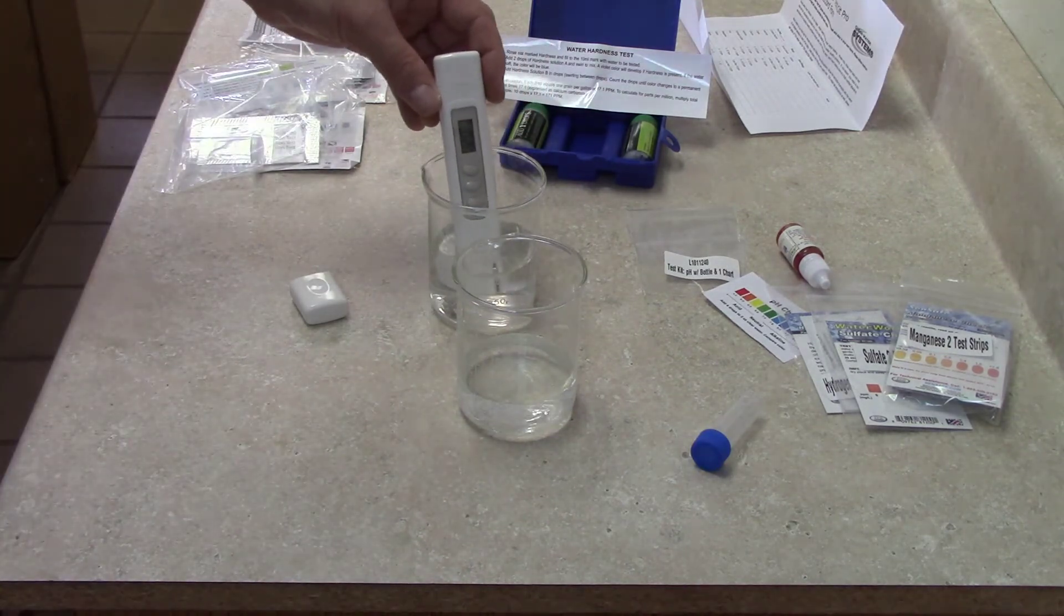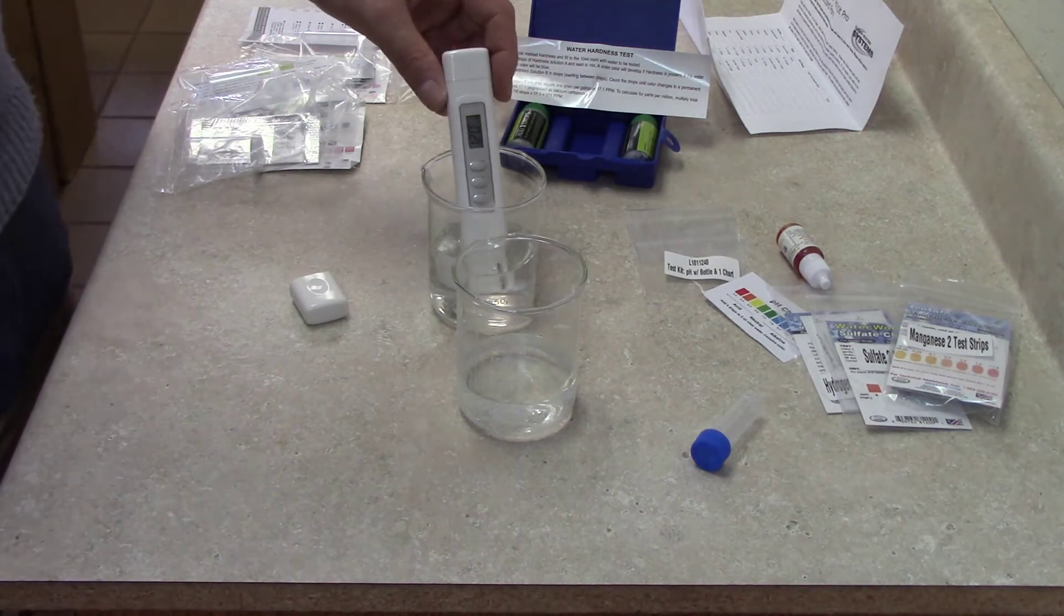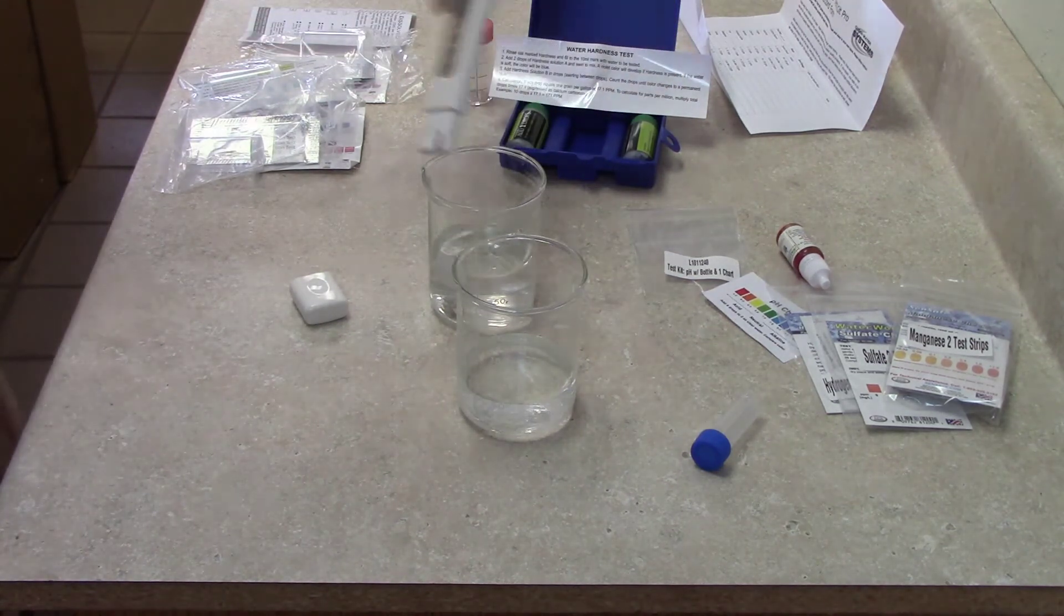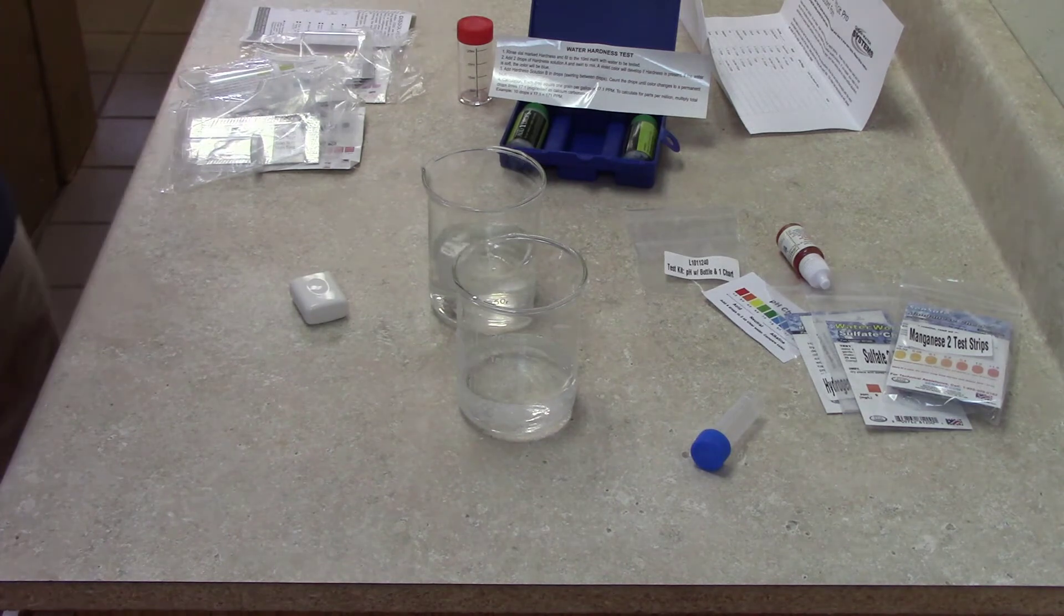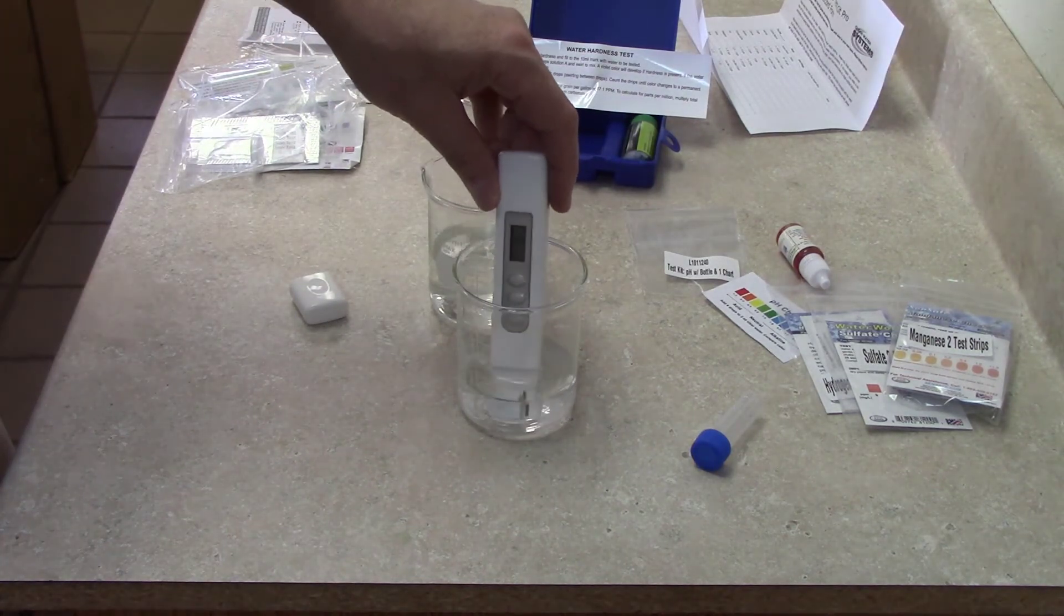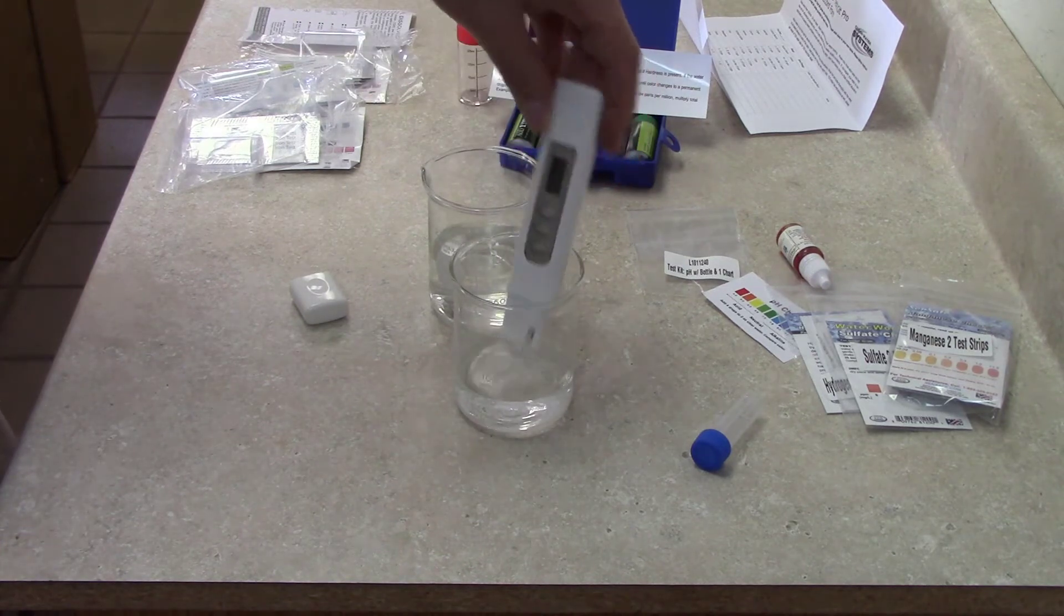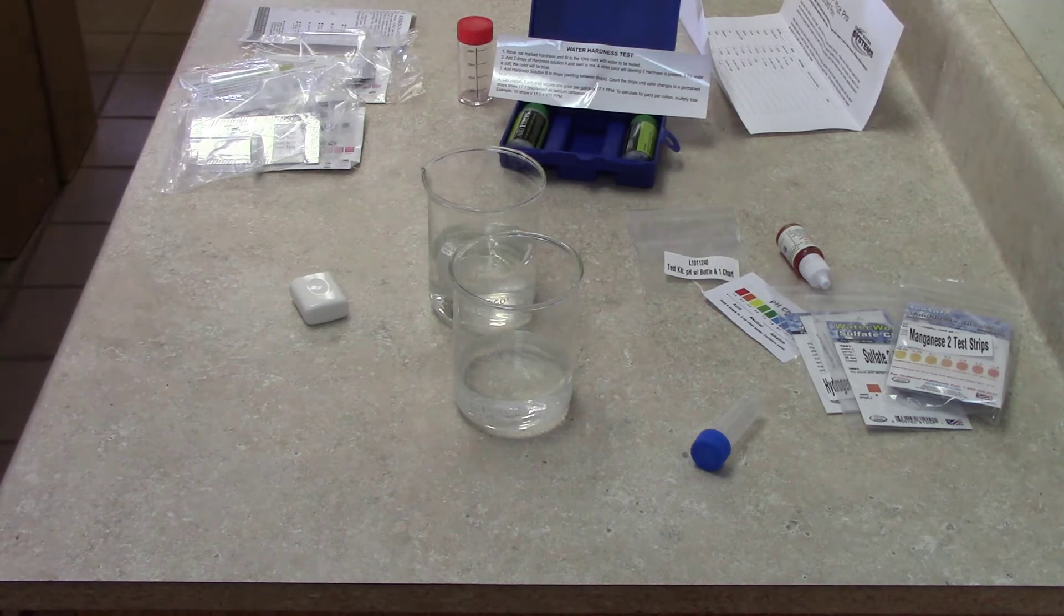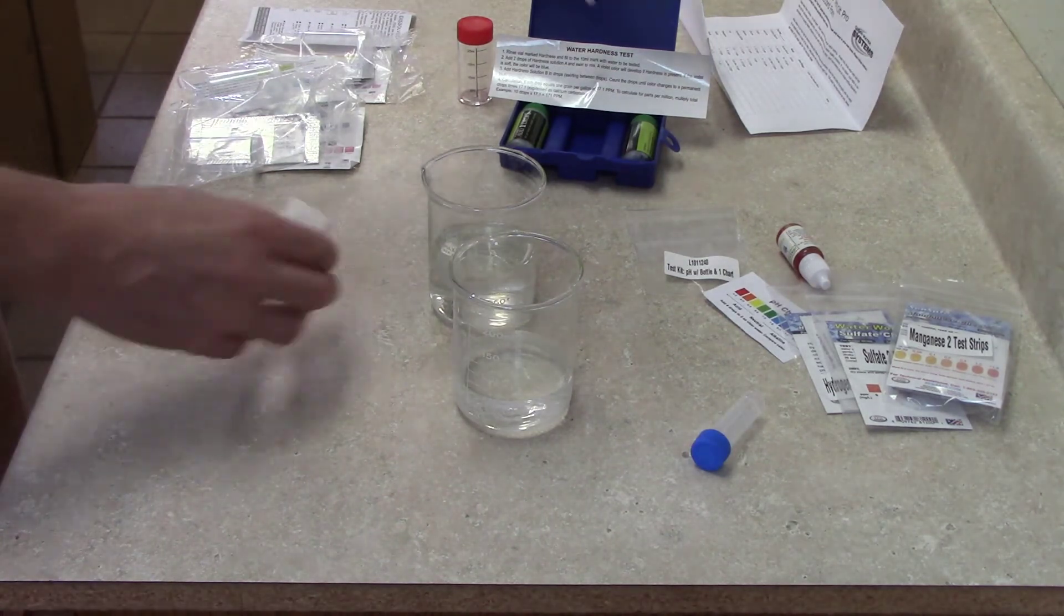For example, my city water here is sitting at 120 parts per million on total dissolved solids. Then I'll stick it in my RO, reverse osmosis water, and it drops down to about six or seven parts per million. So it tells you that the thing is working if you sample it on two different waters. That's basically how that works.